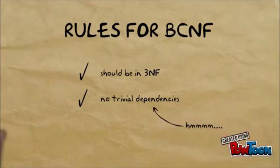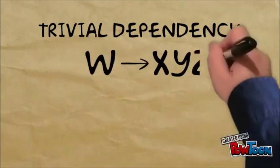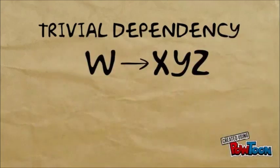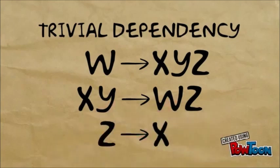A trivial dependency, you ask? A trivial dependency can be shown in this figure. W determines X, Y, and Z. X and Y, as a combined key, determines W and Z. But Z also determines X. This is a trivial dependency.